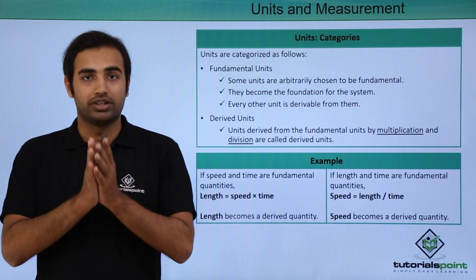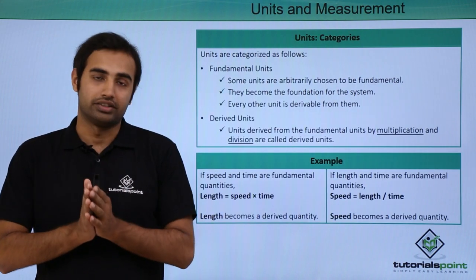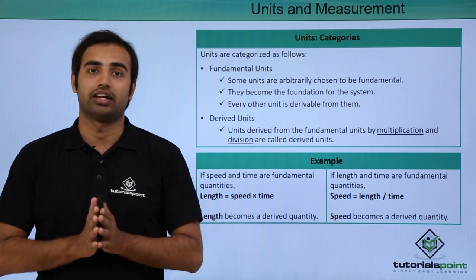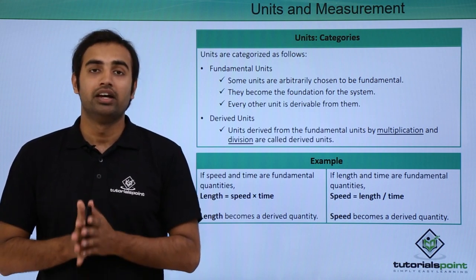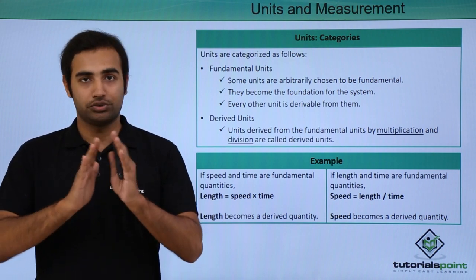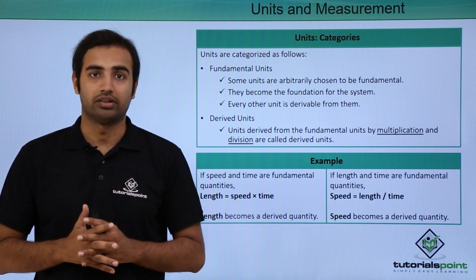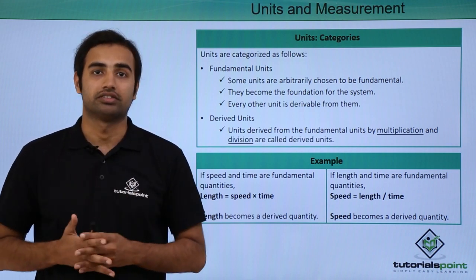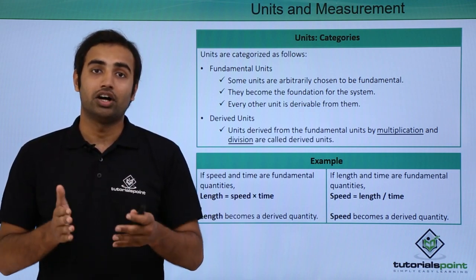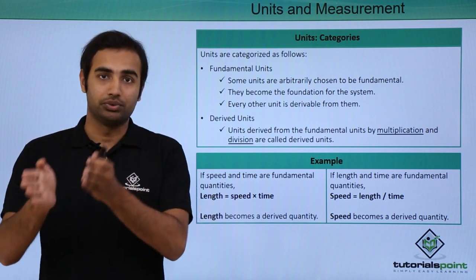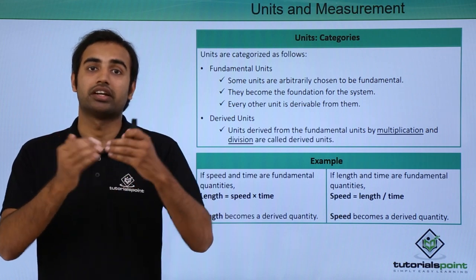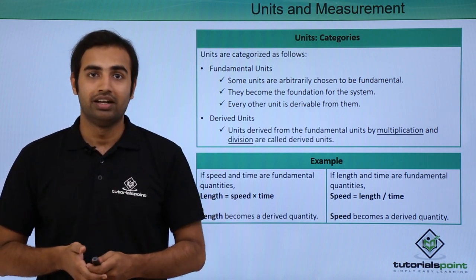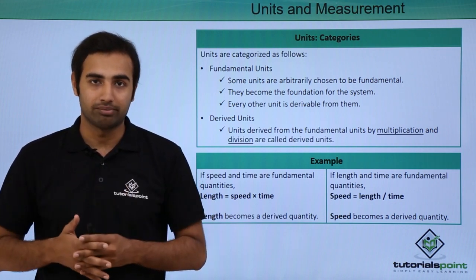We can classify units in two categories. The first one is fundamental and the second are derived units. The fundamental units are arbitrarily chosen to be fundamental and they become the foundation for any metric system. Any other unit in that metric system can be derived from these fundamental units. Let's take an example for this.